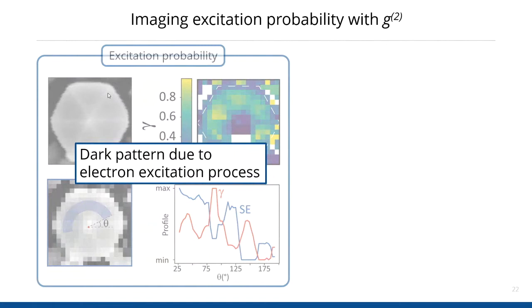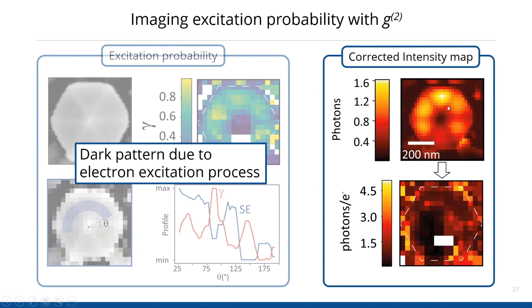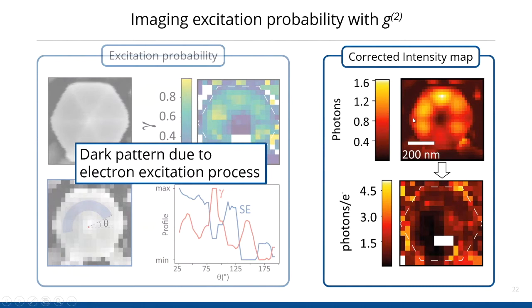If you look at a cathodoluminescence intensity map measured in spectroscopy, you see this faceting and these edges come back in the intensity map. You can correct this with the G2 map, and if you do that, this pattern disappears. That means the intensity variation you see is a geometrical effect related to the electron beam excitation and not necessarily to variations in the material itself. Because you can decouple these things, you can do this without any prior knowledge of the structure — no knowledge of the geometry, and no need for destructive cross-sections by FIB milling. You can just do the time-dynamical experiments with the G2 to obtain this information.